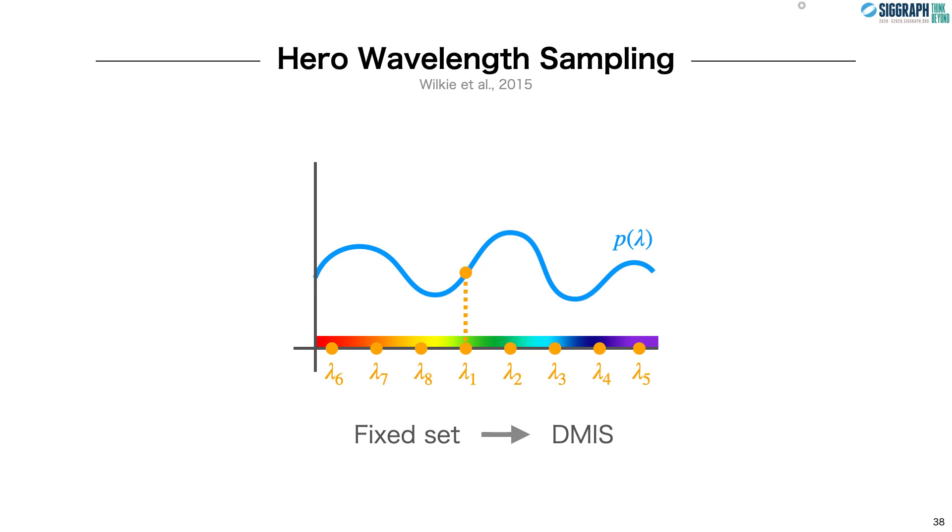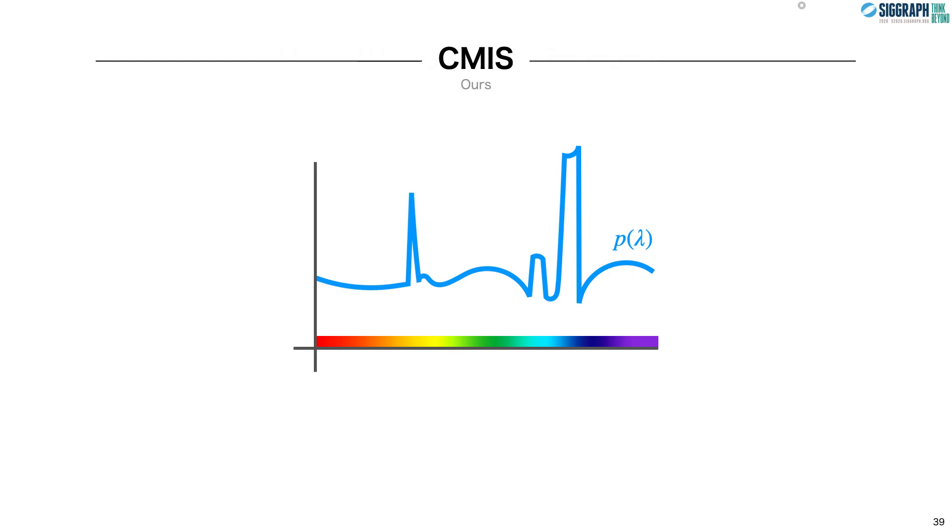The even spacing of wavelength samples, however, smooths out their distribution. This prevents the method from effectively importance sampling spiky distributions, like those found in fluorescent lights. Since we have a continuum of techniques, we can apply CMIS theory. This gives us the freedom to importance sample not just one, but all wavelengths. Incorporating this kind of importance sampling is non-trivial in HeroMIS. However, with CMIS, it is the simplest change in the probability density of sampling techniques.